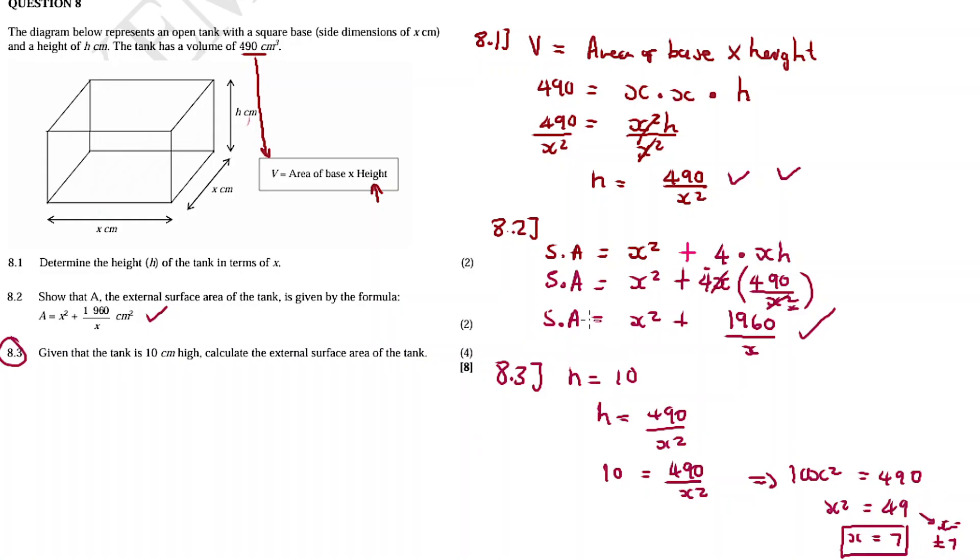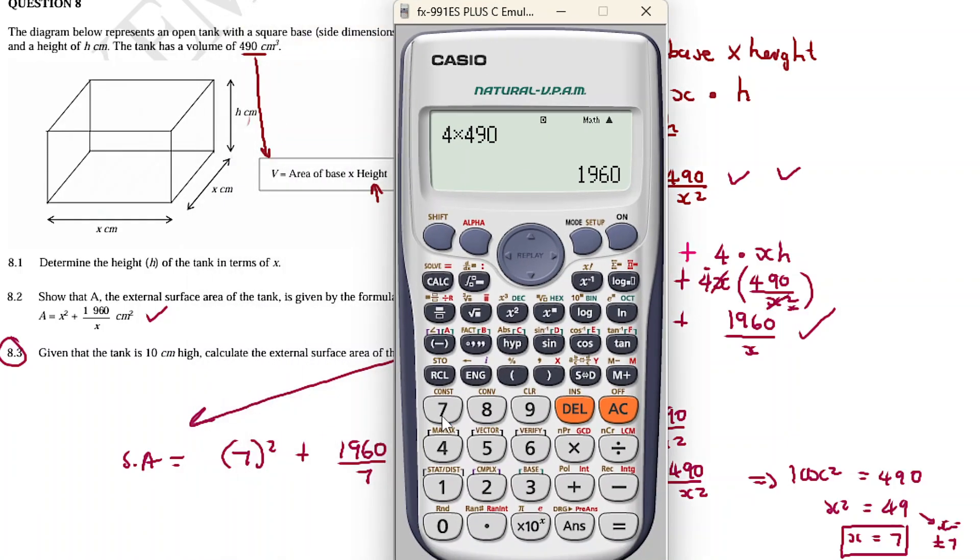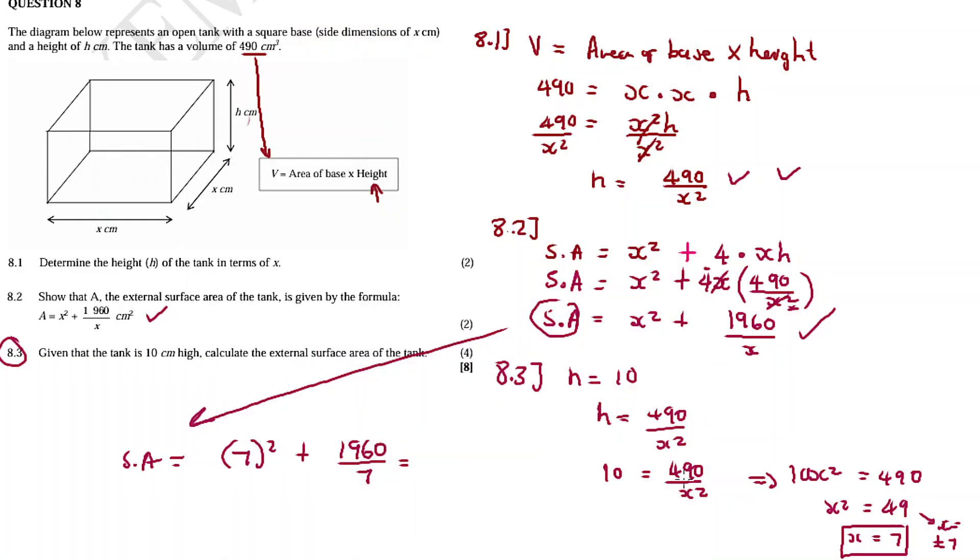Now since we have the surface area again, where there's x I put in the seven. Seven squared plus 1960 divided by seven. What's the answer? What's the answer? It's seven squared plus 1960 divided by seven: 329 centimeter squared. This is our final answer for this question eight, short and simple, short and sweet.